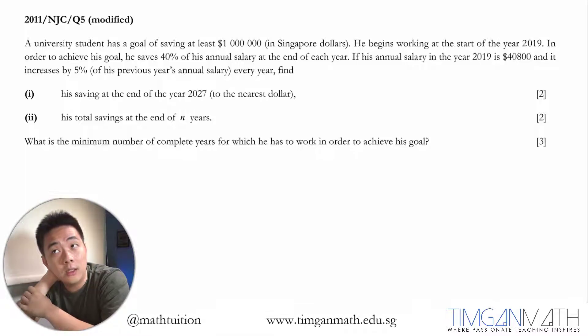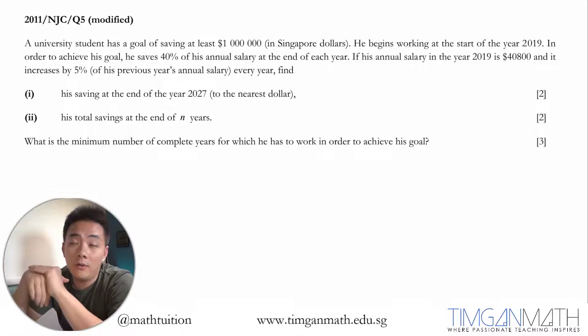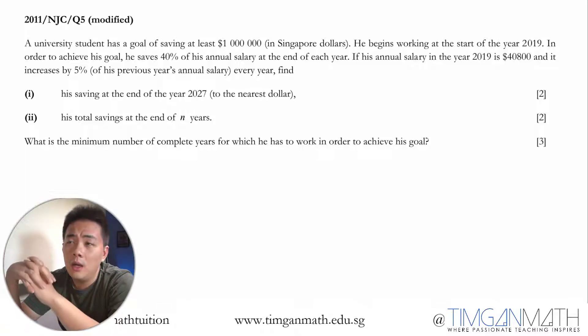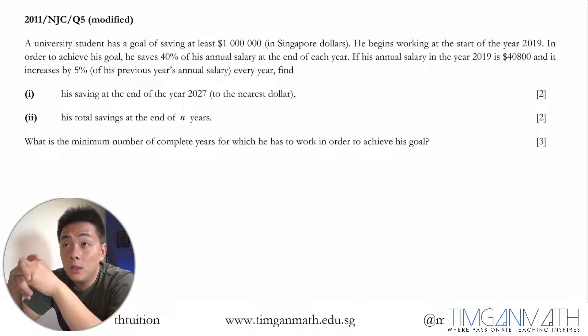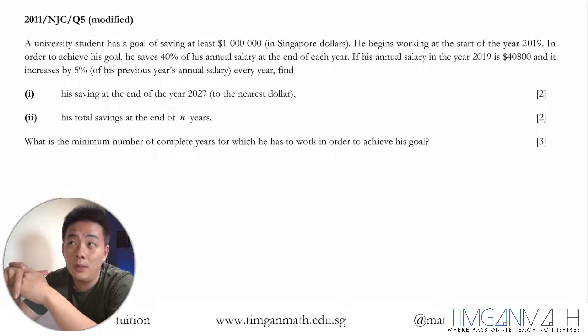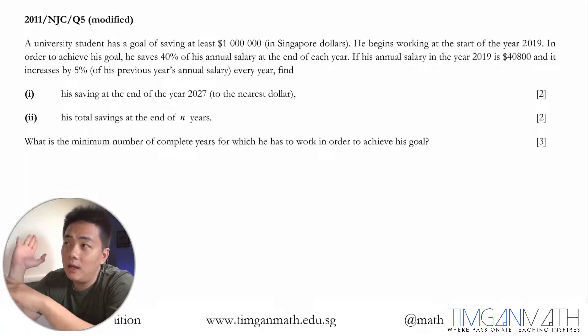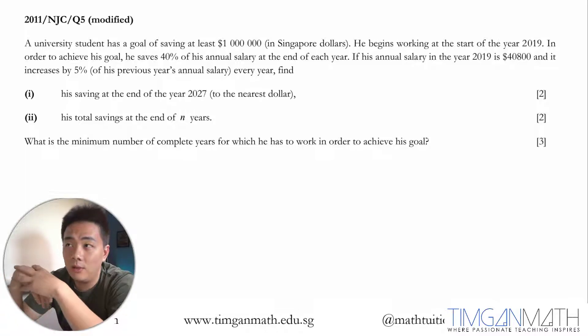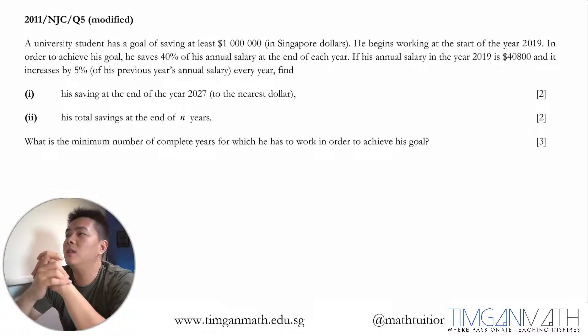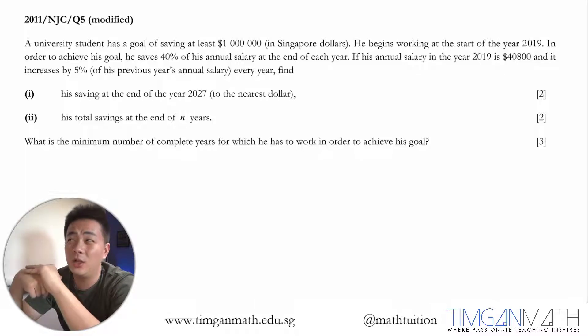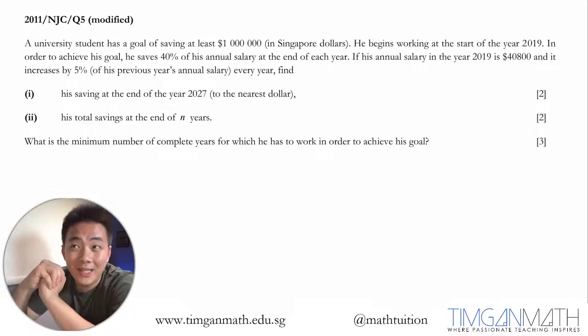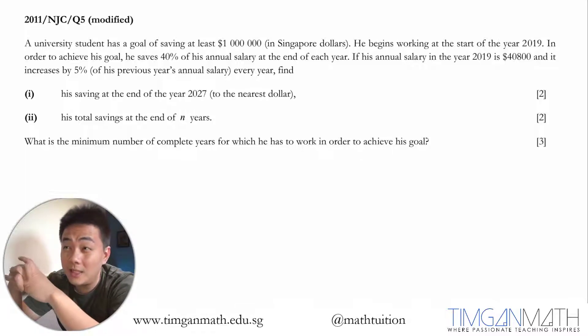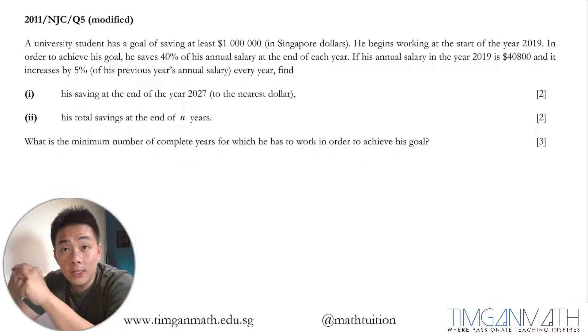This question was taken from the NGC question 5 from the year 2011 paper. I'm not sure whether it's paper 1 or paper 2, but anyway, this is the modified question taken from one of the school tutorials. A university student has a goal of saving at least $1 million in Singapore dollars. He begins working at the start of the year 2019. In order to achieve his goal, he saved 40% of his annual salary at the end of each year. If his annual salary in the year 2019 is $40,800 and it increases by 5% of his previous year's annual salary every year, finally saving at the end of the year 2027.